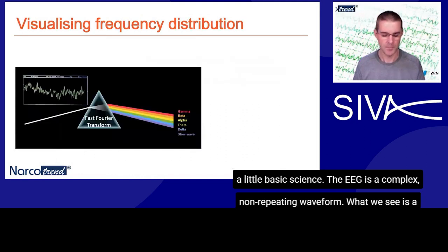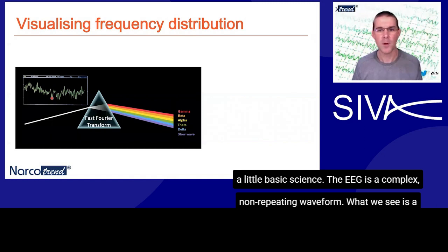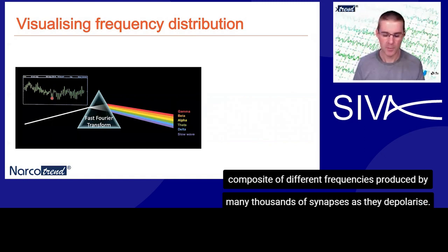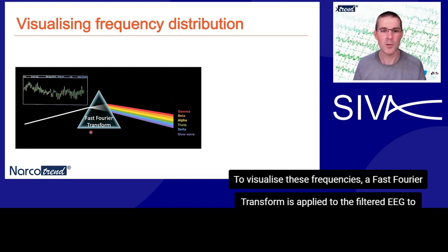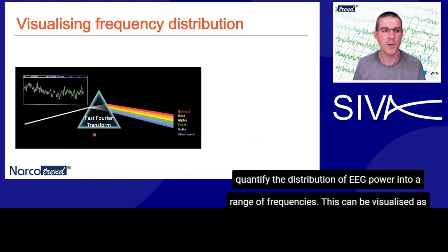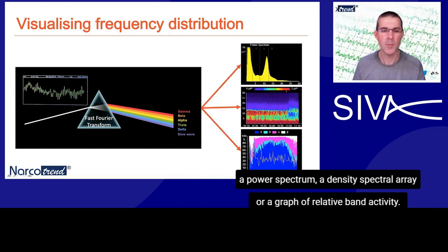A little basic science. The EEG is a complex, non-repeating waveform. What we see is a composite of different frequencies produced by many thousands of synapses as they depolarise. To visualise these frequencies, a fast Fourier transform is applied to the filtered EEG to quantify the distribution of EEG power into a range of frequencies. This can be visualised as a power spectrum, a density spectral array, or a graph of relative band activity.